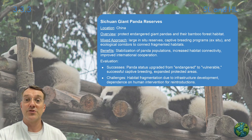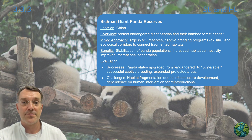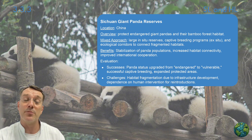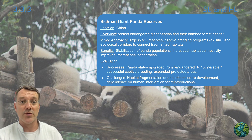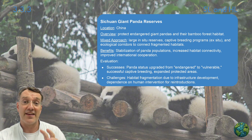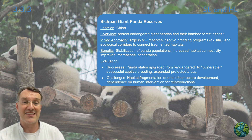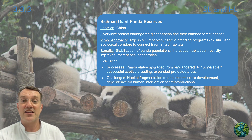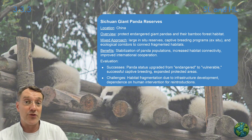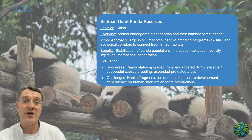The Sichuan Giant Panda Reserve in China is an excellent example of a mixed approach. These reserves protect endangered giant pandas and their bamboo forest habitat through large in-situ reserves, captive breeding programs, and ecological corridors that connect fragmented habitats. This has stabilized panda populations and improved international cooperation. Successes include the panda's status being upgraded from endangered to vulnerable, though challenges remain such as habitat fragmentation and dependence on human intervention.